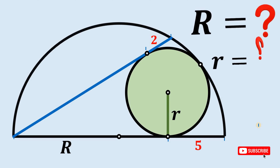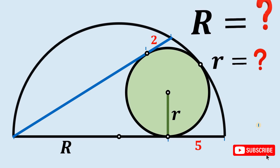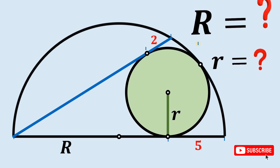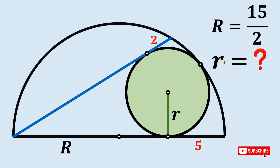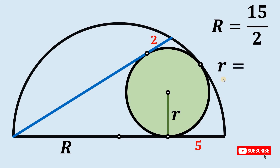Pause this video right now and see if you can answer this question, because I will show you the answer and the solution in 3, 2, 1. Alright, the measure of capital R is simply equal to 15 over 2, or 7.5, and the length of the radius small r is simply equal to 10 over 3.